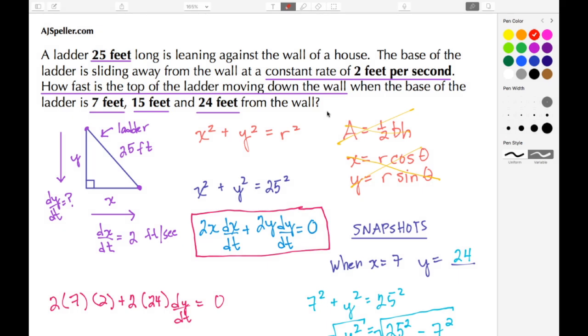Welcome back to ajspeller.com. In today's tutorial, we're going to revisit the related rates problem, in particular the sliding ladder problem, and we're going to use technology to model it. Here we have a ladder 25 feet long leaning against the wall of a house. The base of the ladder is sliding away from the wall.